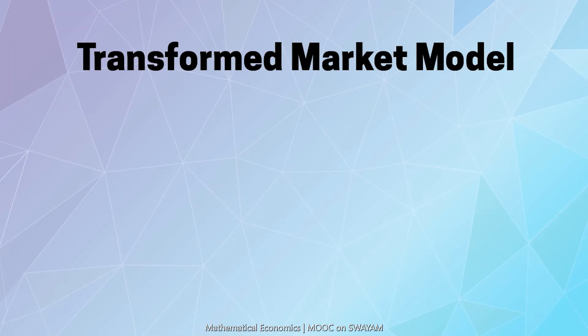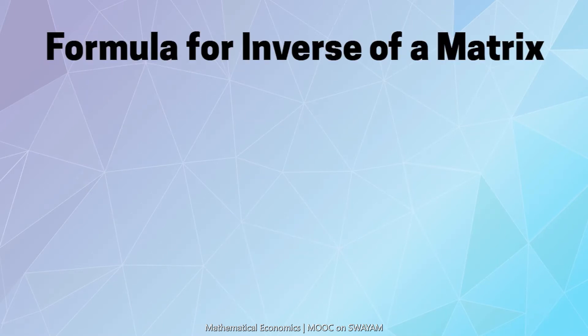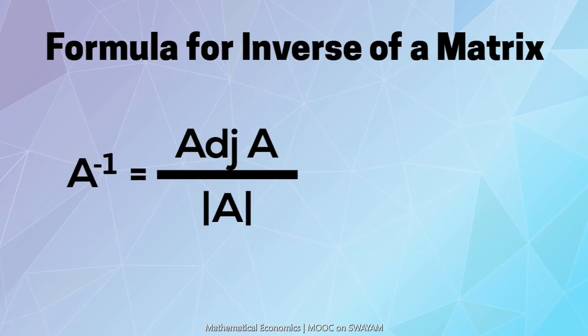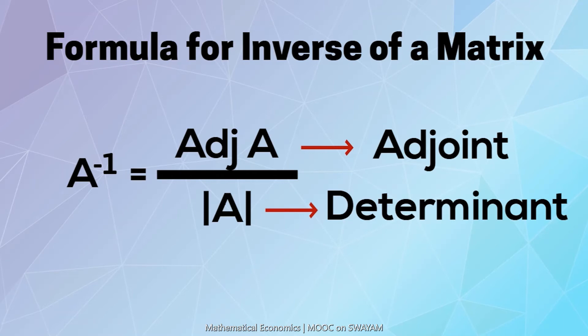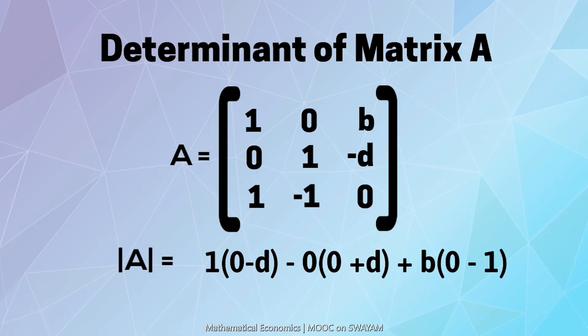So our transformed market model is X equals A inverse Z. We now proceed to find A inverse. The formula for finding out the inverse of a matrix is given by the ratio of the adjoint of the matrix to the determinant of the matrix. And for a solution to exist, determinant of A must not be equal to zero. In the example of the transformed market model, determinant of A equals minus B plus D. I would ask you to pause the video for a few seconds and understand how the determinant is calculated.